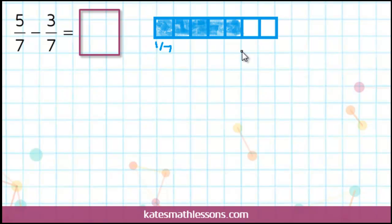If I'm going to subtract 3 7ths, that means I need to take away 3 of the boxes. So I can subtract 3 of the boxes to see what's left over. Once I erase 3 of the boxes, I can see that there are only 2 left over.